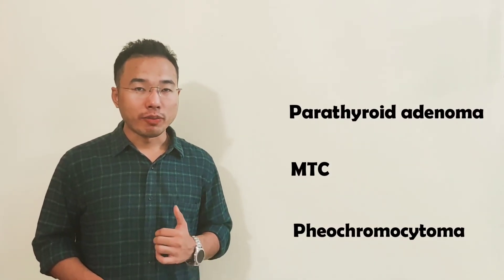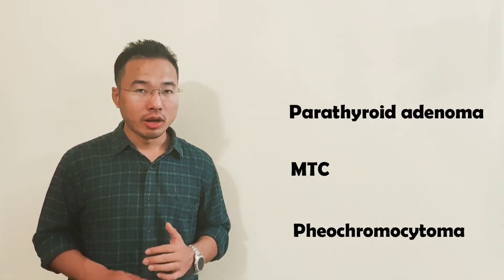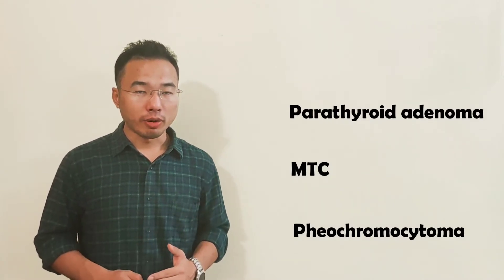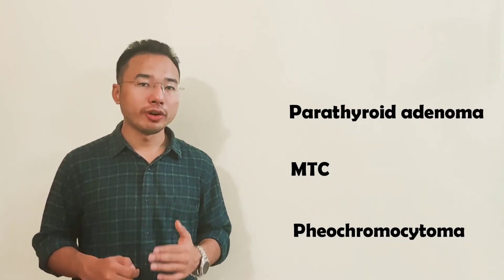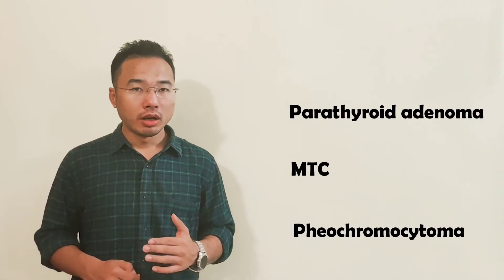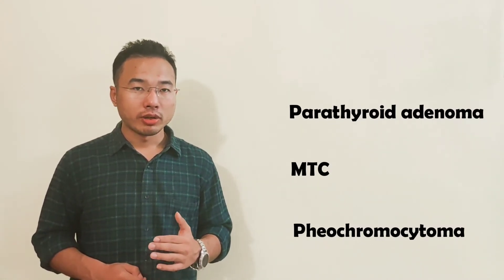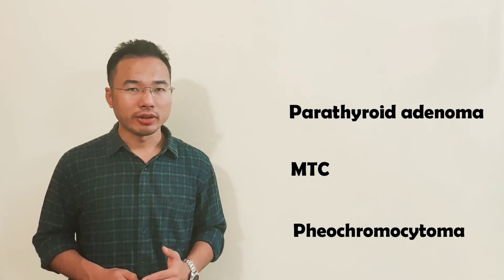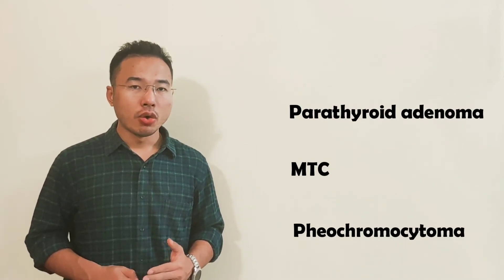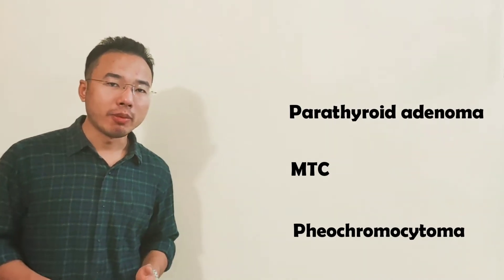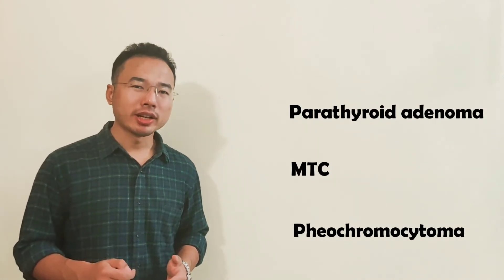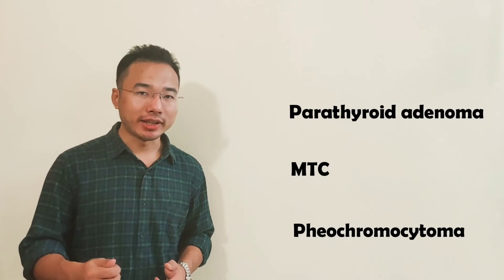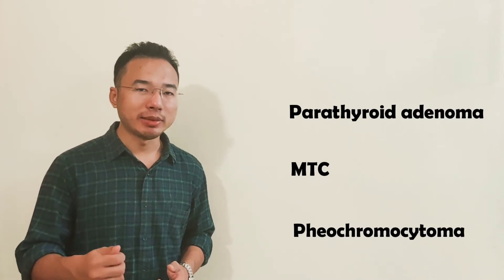Now the components of MEN2a syndrome — let's imagine they are a group of three friends: pheochromocytoma, medullary thyroid cancer, and parathyroid adenoma. Who is the least important friend among these three? Parathyroid adenoma, because of the name 'para' — meaning on the side — is the least important friend.